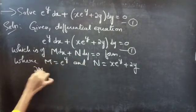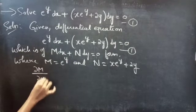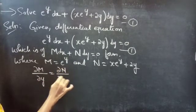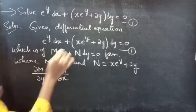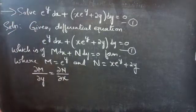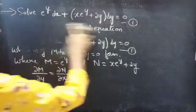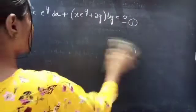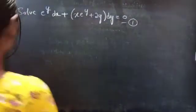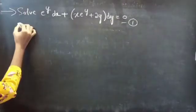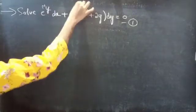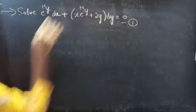If the partial derivative of M with respect to y equals the partial derivative of N with respect to x, then we can say that the given differential equation is an exact equation. So let's find the partial derivative of M with respect to y, and N with respect to x.